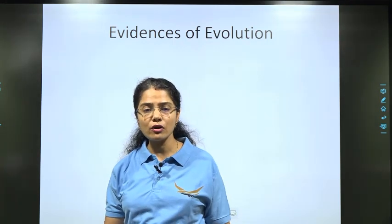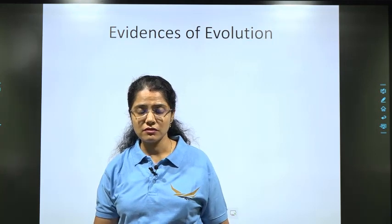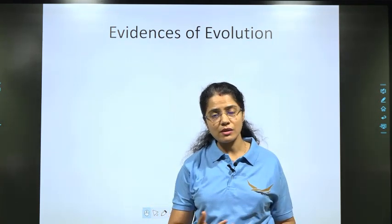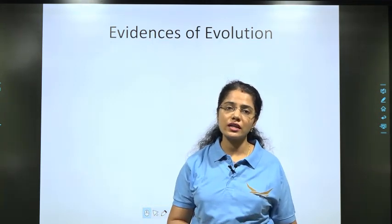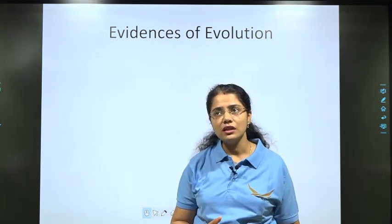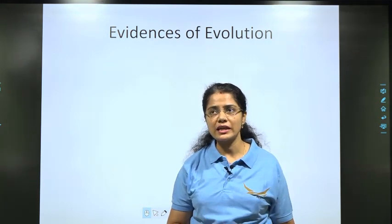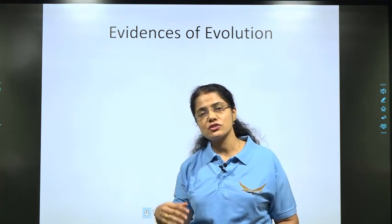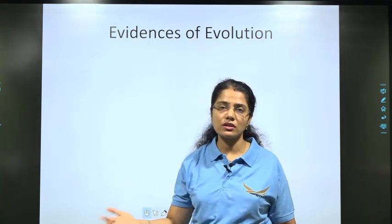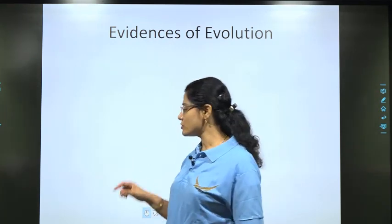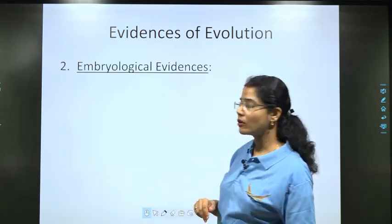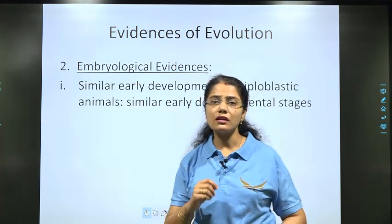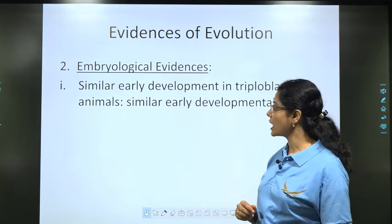What does this embryological evidence tell us? Study of the embryos of various vertebrate groups shows that there are many-many similarities — that from previous simpler life forms, through modifications, the current complex organisms have formed. So we are going to study the embryological evidence. The first point is: similar early development in triploblastic animals.